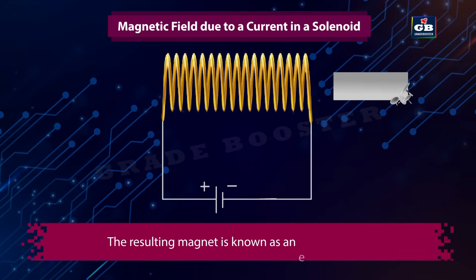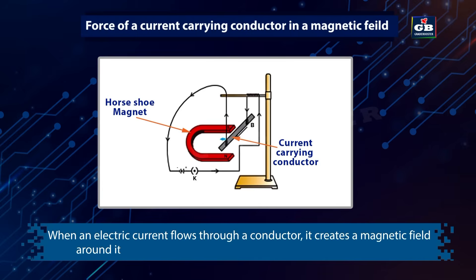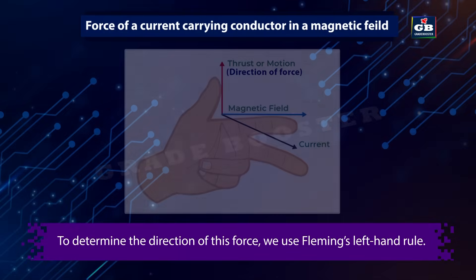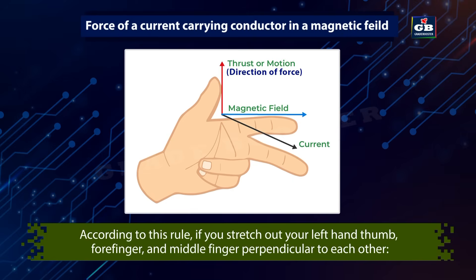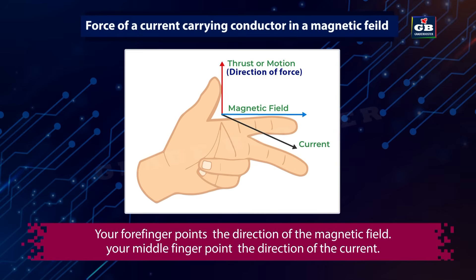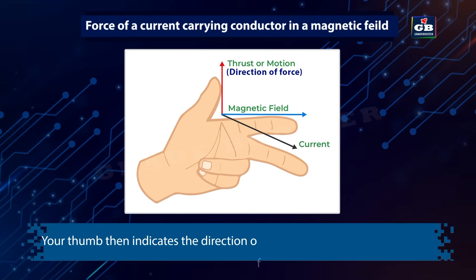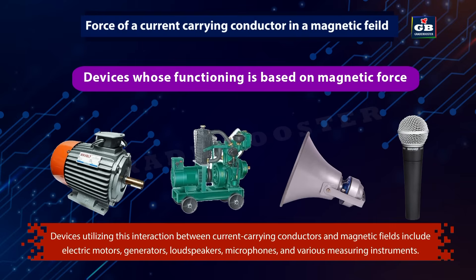A robust magnetic field generated inside a solenoid can magnetize magnetic materials like soft iron placed inside the coil. The resulting magnet is known as an electromagnet. Force of a current-carrying conductor in a magnetic field: when an electric current flows through a conductor, it creates a magnetic field around it, which can exert a force on a nearby magnet. To determine the direction of this force, we use Fleming's left-hand rule. If you stretch out your left-hand thumb, forefinger, and middle finger perpendicular to each other, your forefinger points the direction of the magnetic field, your middle finger points the direction of the current, and your thumb indicates the direction of the force acting on the conductor. Devices utilizing this interaction include electric motors, generators, loudspeakers, microphones, and various measuring instruments.